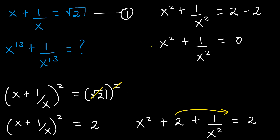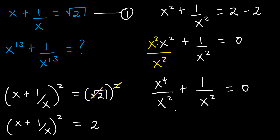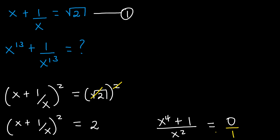At this point, in order to have the same denominator, let's multiply by x to the power of 2 and then divide through by x to the power of 2. This gives us x to the power of 4 divided by x to the power of 2 plus 1 divided by x to the power of 2 equaling to 0. Since we have the same denominator, we combine the numerators: x to the power of 4 plus 1 divided by x to the power of 2 equals 0. Cross-multiplying, x to the power of 4 plus 1 equals 0, and so x to the power of 4 equals negative 1. We shall call this equation 2.